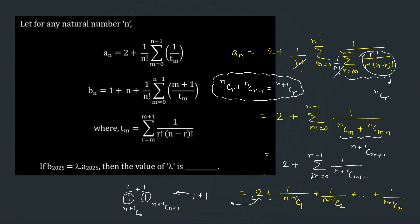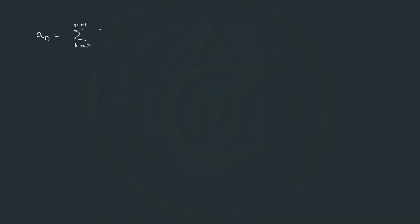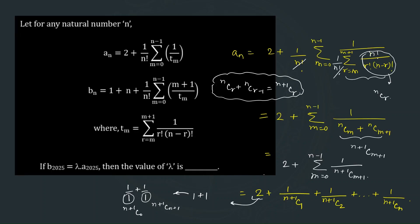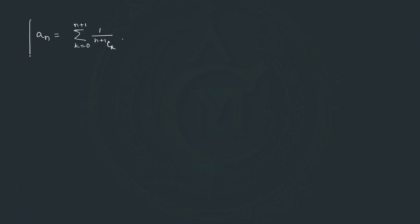So we get the complete series as aₙ equal to summation k equal to 0 to n+1 of 1 over (n+1)Ck, because if you expand this you get the exact same series we derived. This is our expression for aₙ — let us call this equation one.